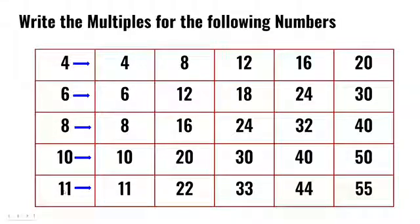In the last row, we have to write the multiples of 11. 11 ones are 11, 11 twos are 22, and so on. The first 5 multiples of 11 are 11, 22, 33, 44, and 55.